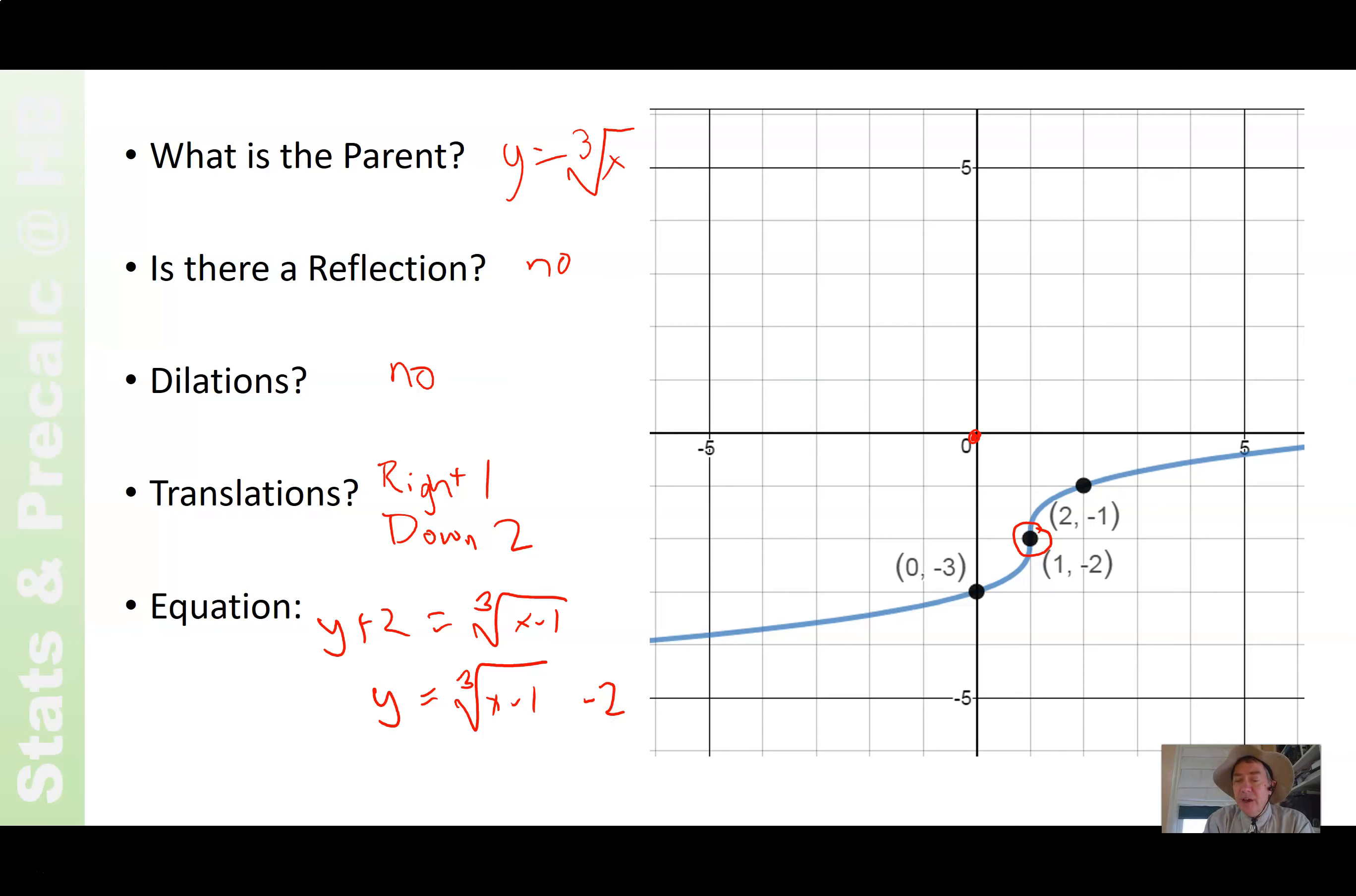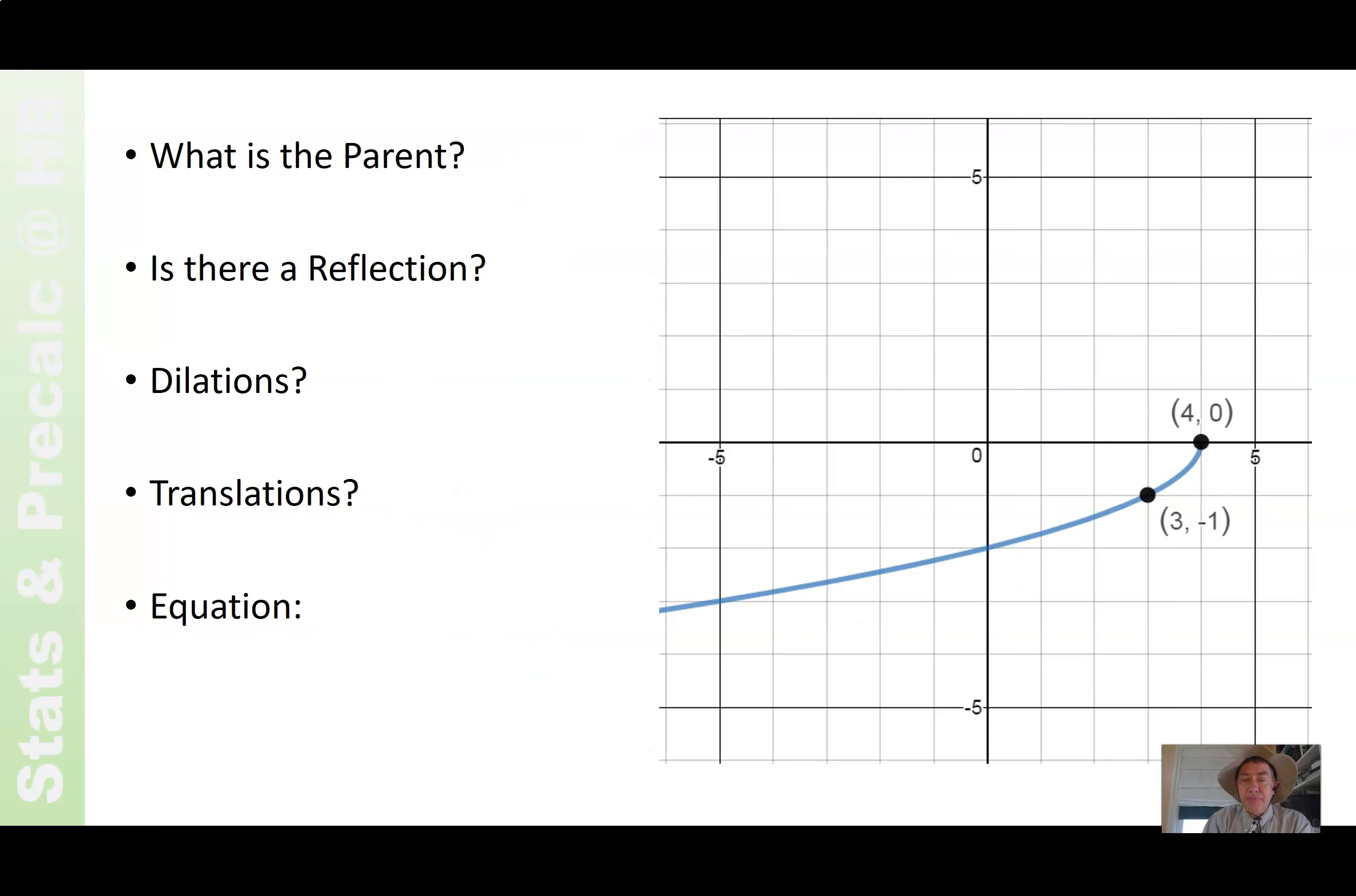All right, moving on. What do we have here? What's the parent? This one's the square root, obviously, because you're only looking at part of it. Is there a reflection? Think back to those pictures. Which way is this going? This is going down and to the left. So that is actually reflected in both x and y.